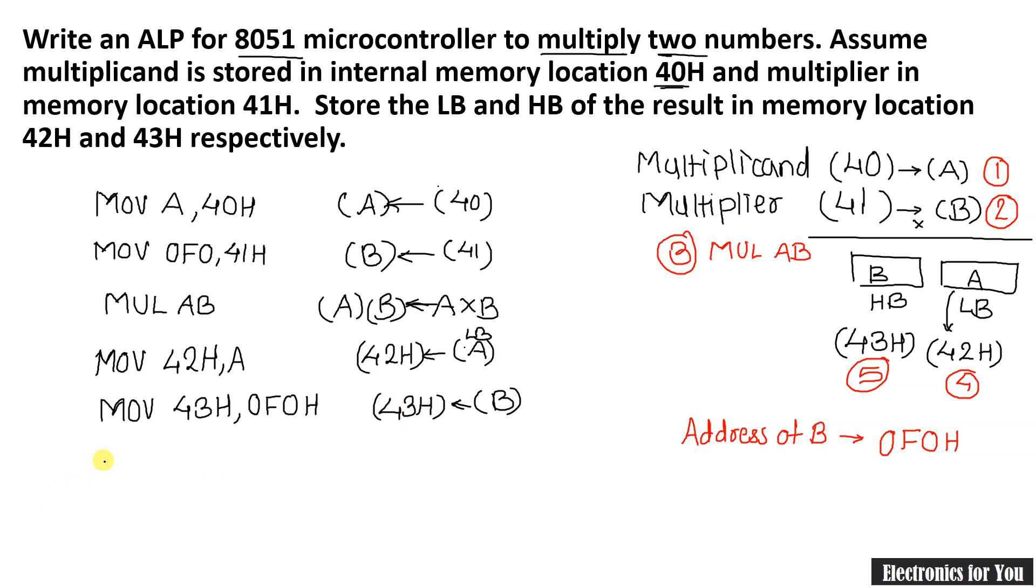Now end of program in case of ALP 8051 is just like this loop. So here you can use any loop name and SJMP or AJMP instruction should be used. Then loop, SJMP loop to jump itself. That is nothing but end of program.